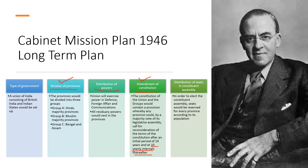The last point of the long-term plan was the distribution of seats in the Constituent Assembly. Seats would be reserved for every province according to its population — if a province had a Muslim majority, more seats would be reserved for Muslims in the Constituent Assembly. These were the five main points of the long-term plan given by the Cabinet Mission in 1946.